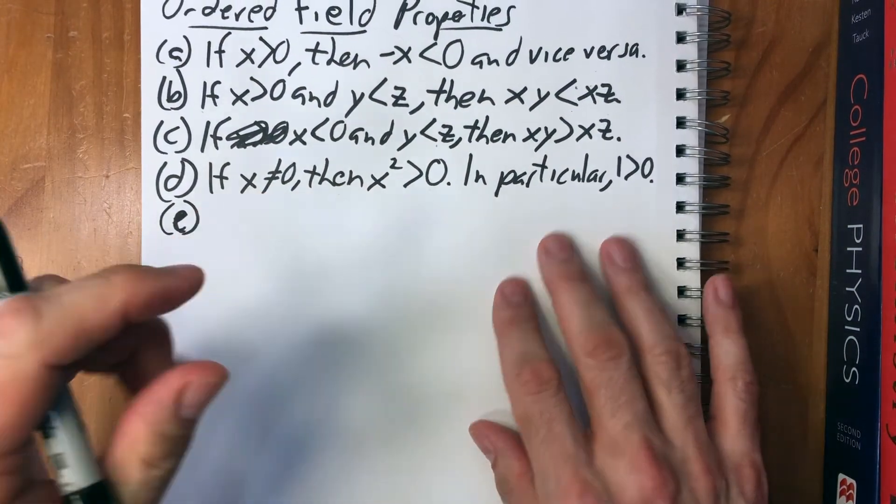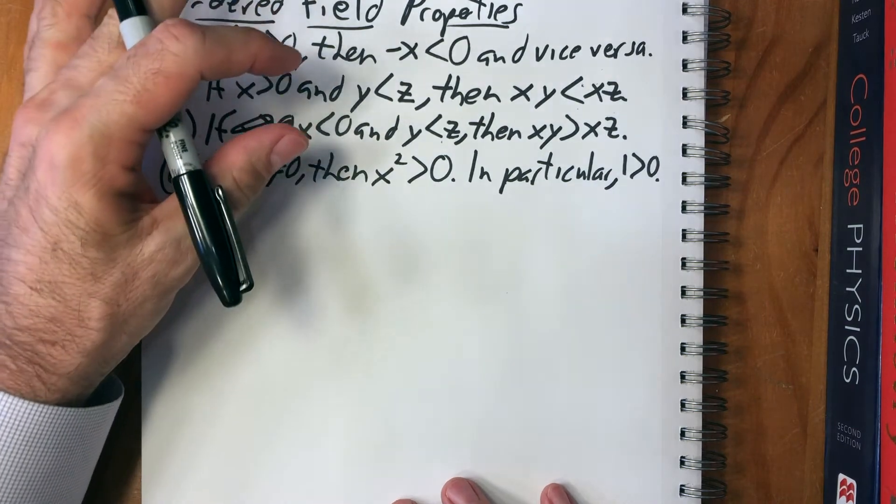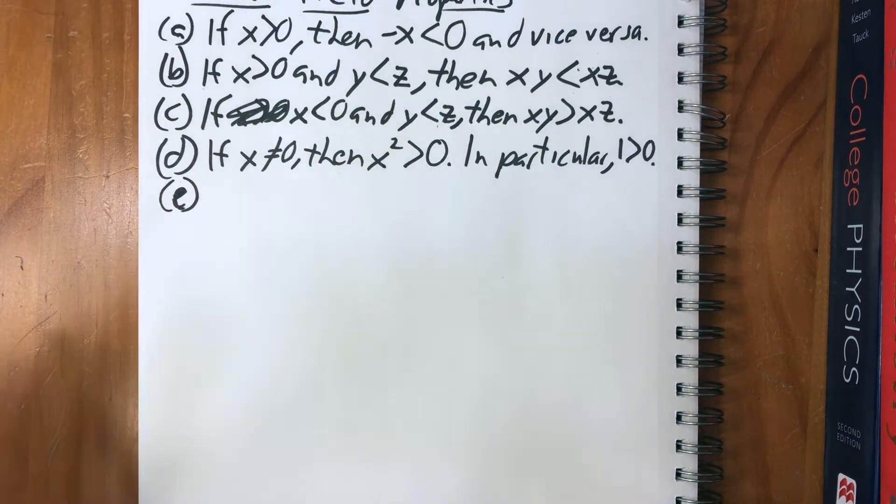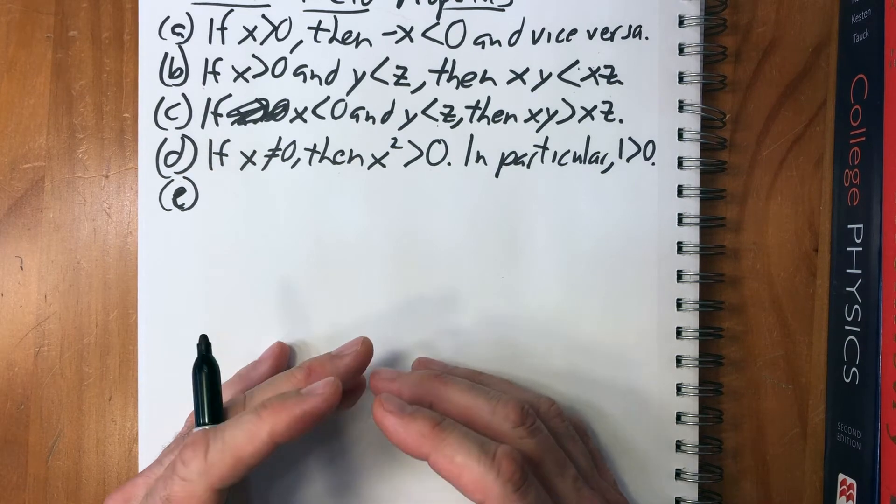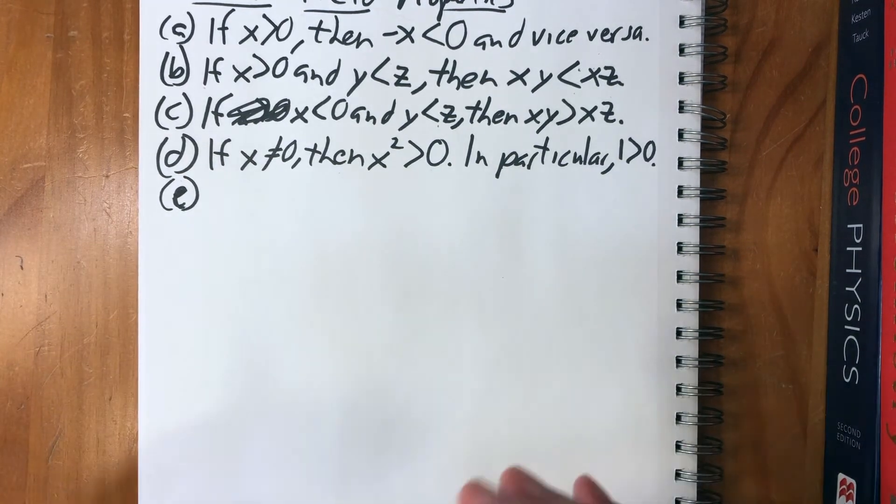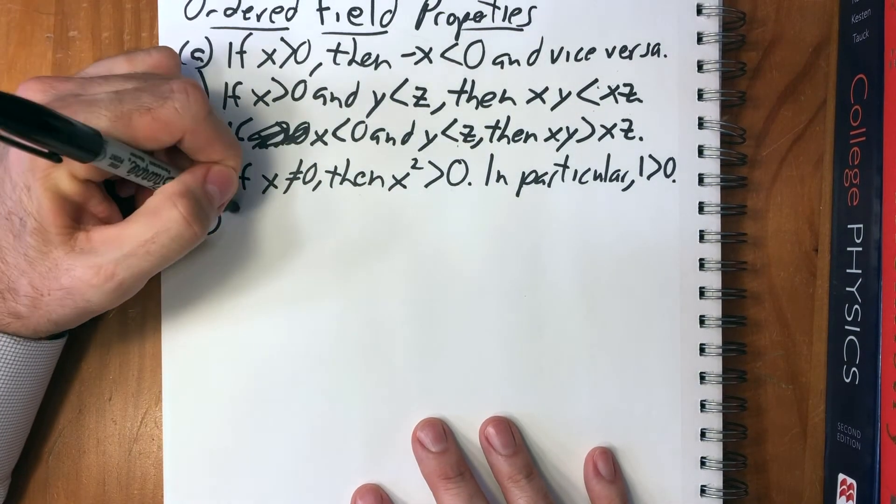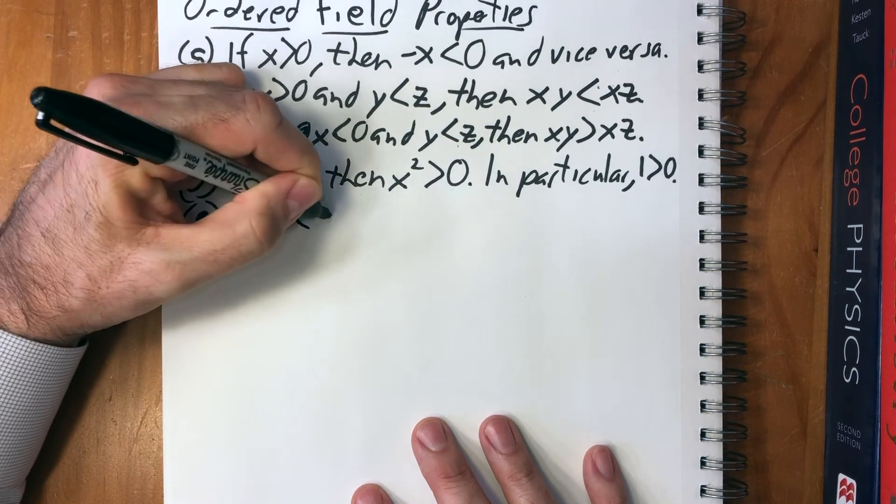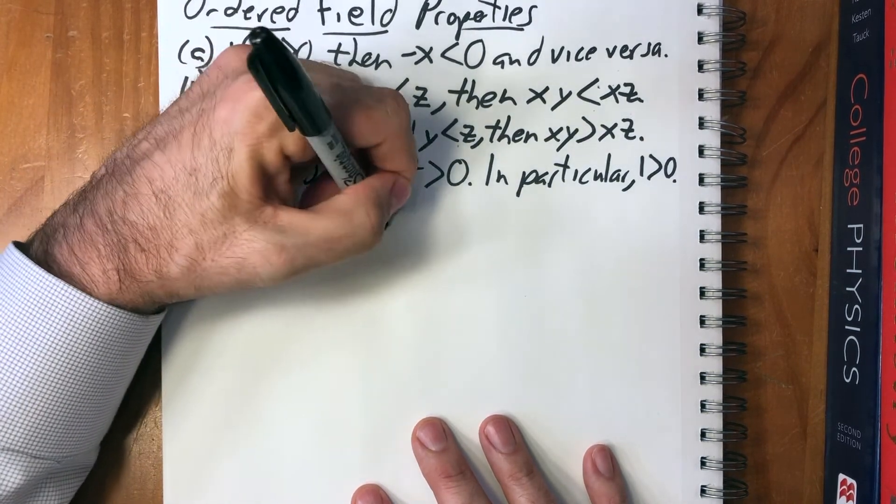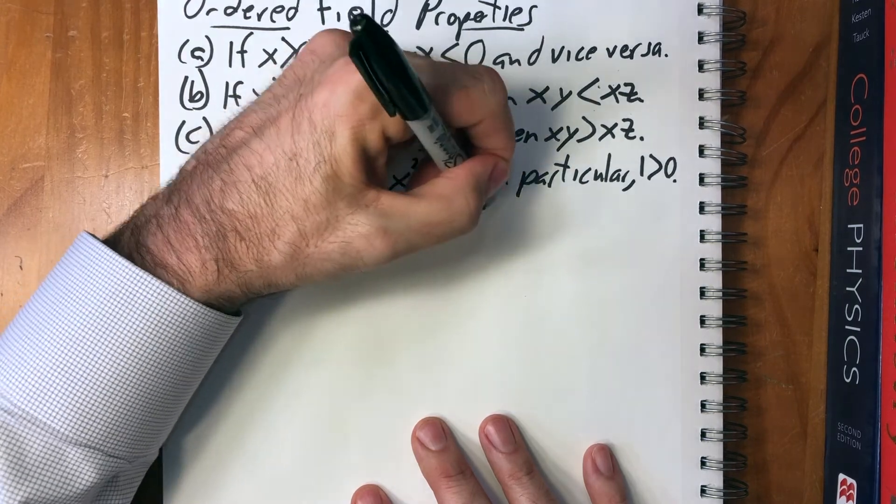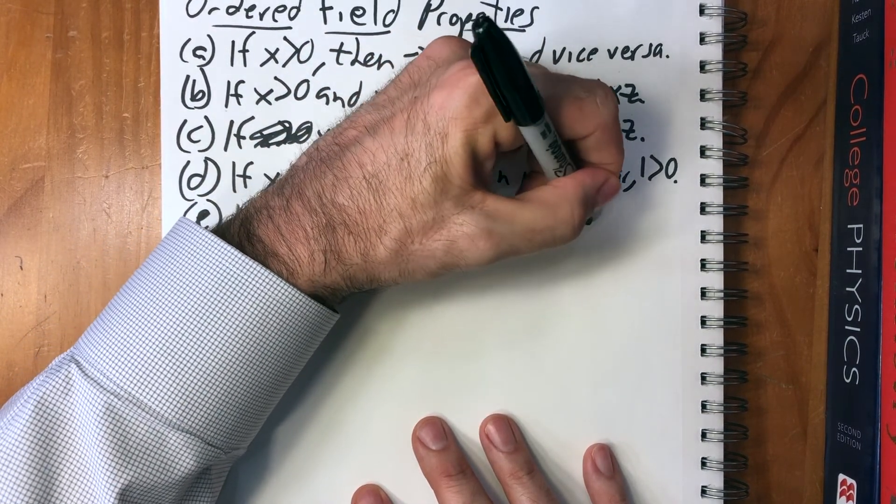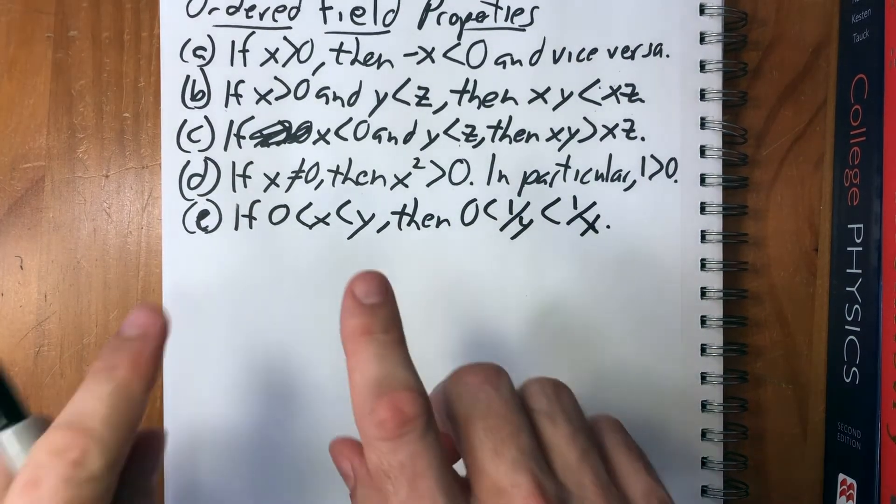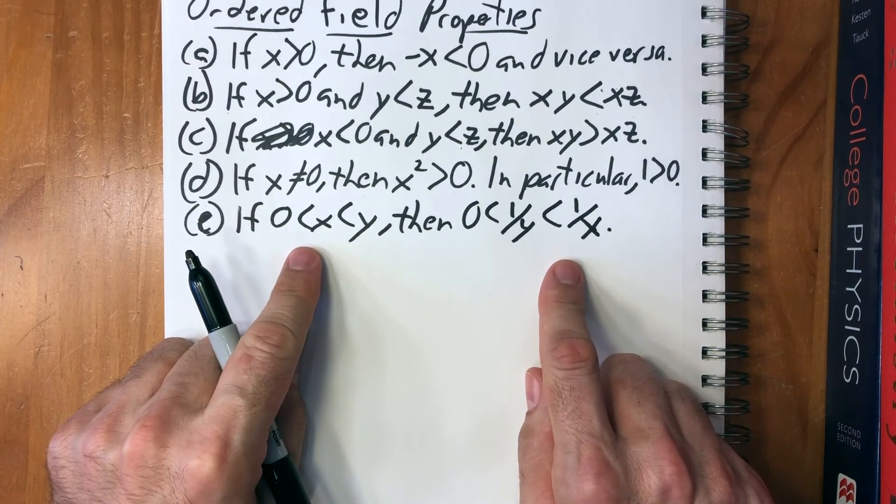And finally, so this shows that just by these simple, these few little rules you add a lot of structure to the set that satisfies these axioms. And then E, if zero is less than x is less than y, then zero is less than one over y is less than one over x. This is the one rule that I think at least myself I didn't learn as deeply as the other ones.